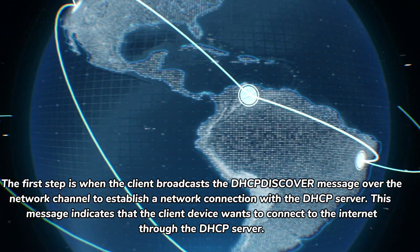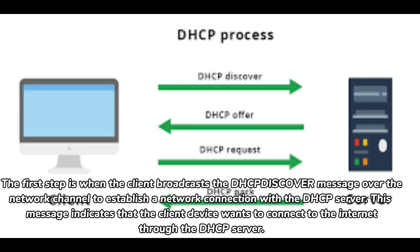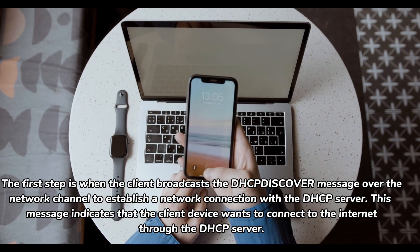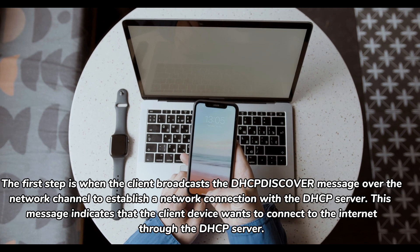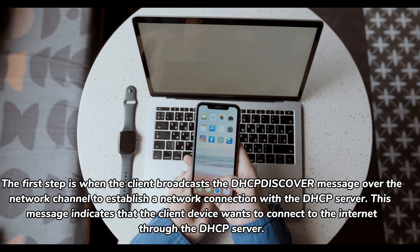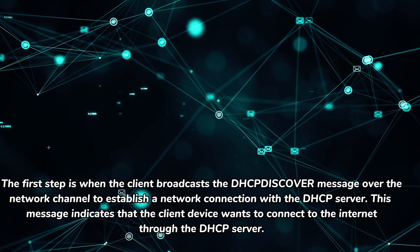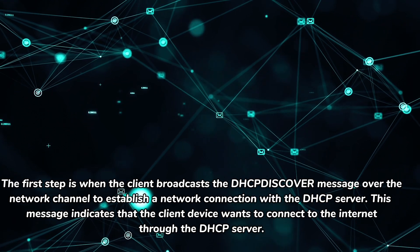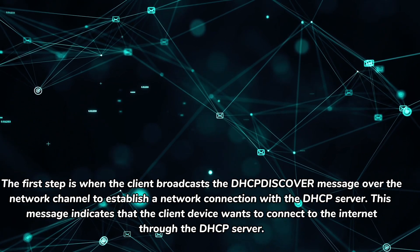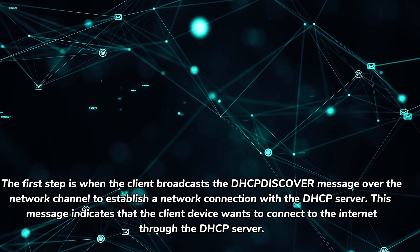The first step is when the client broadcasts the DHCP Discovery message over the network channel to establish a network connection with the DHCP server. This message indicates that the client device wants to connect to the internet through the DHCP server.